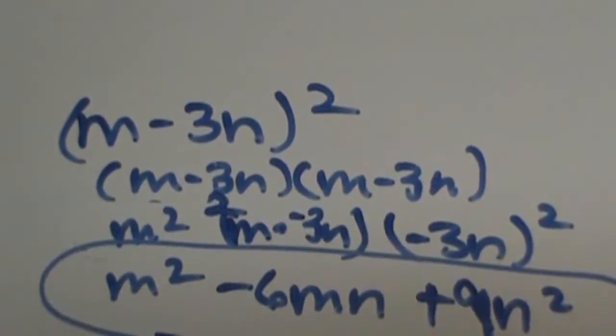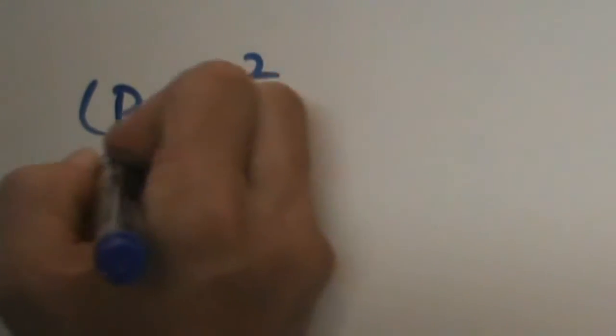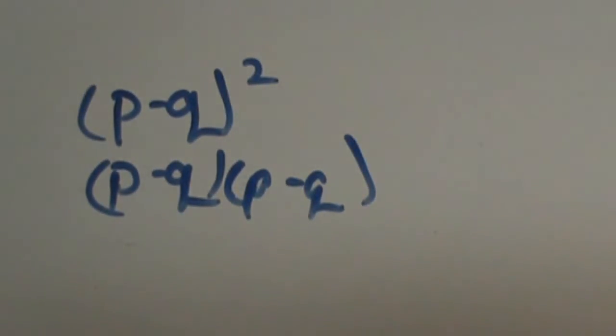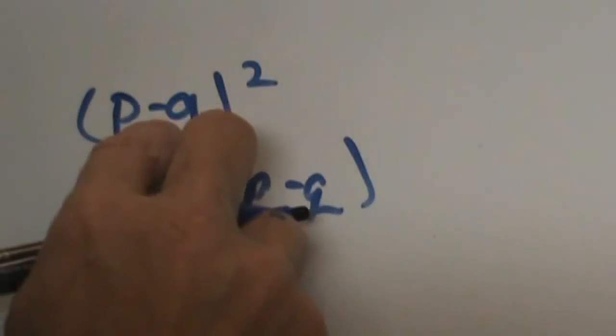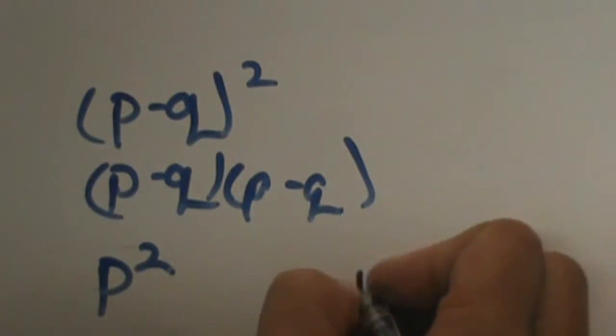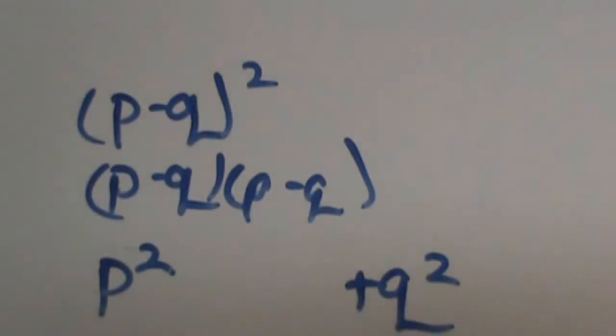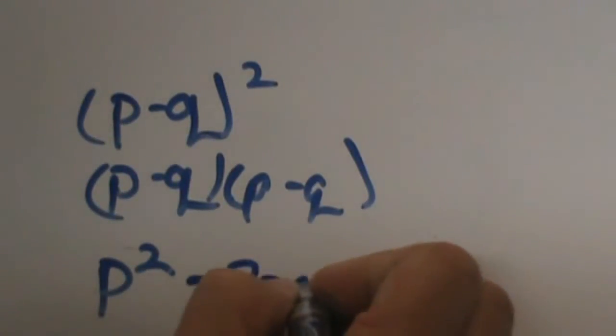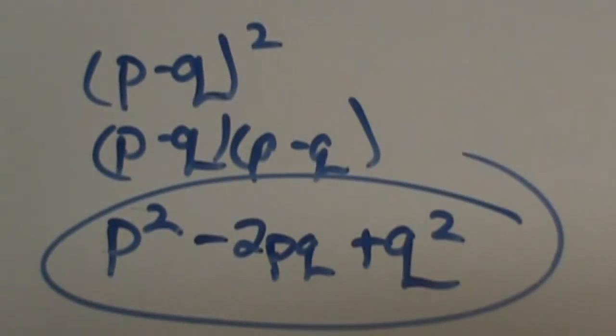Let's try the pq one. We have p minus q, all quantity squared. Let's write it out: p minus q times p minus q. If it's confusing, just FOIL it. But using the pattern: square the first term to get p squared, square the last — negative q times negative q is positive q squared — then multiply and double for the middle to get negative 2pq. That is squaring a binomial.